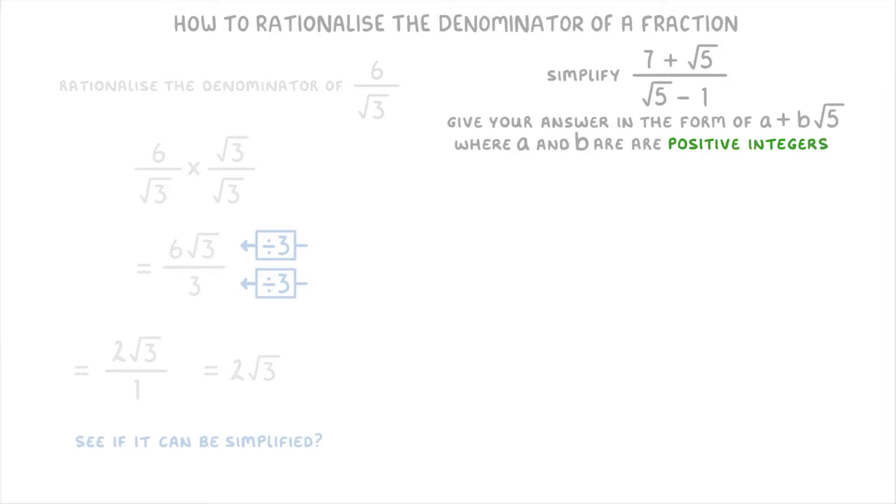Now, asking for the answer in the form of a plus b root 5 is really just their way of telling you that you're going to have to rationalize the denominator. Because we can see that in a plus b root 5, there isn't any surd on the bottom. And all they mean by positive integers is that a and b need to be positive whole numbers.